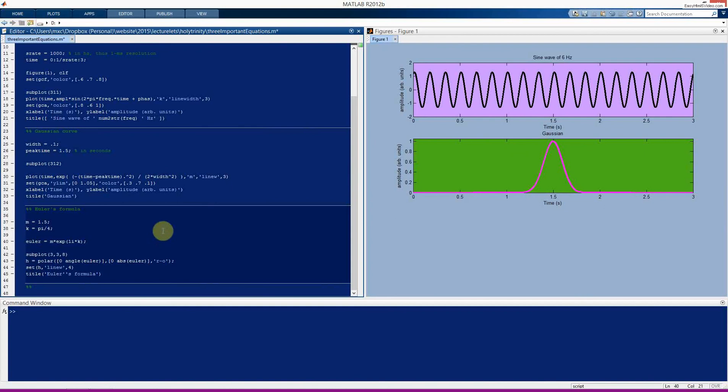We have Euler's formula. Here I define m and k. So this is the length of the line. And k is the angle. And here I just define it to be pi over 4. Here is the MATLAB implementation of Euler's formula. We have m e to the i k. And i is the complex operator. It's the square root of minus 1. That's something we will discuss and learn about in a future video.